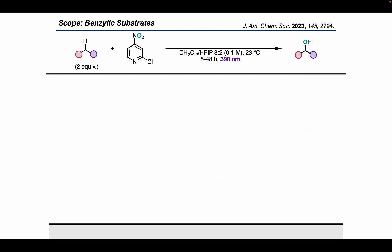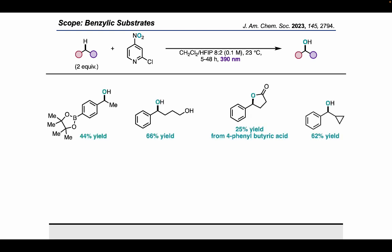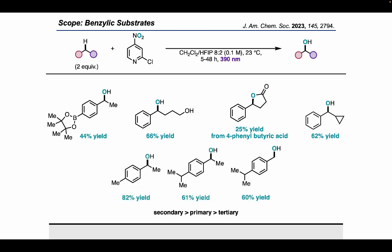One advantage of using mild and anaerobic conditions is the ability to tolerate oxidatively sensitive functional groups. A B-pin, free hydroxyl, and carboxylic acid were all tolerated under the reaction conditions, which would not be tolerated by many previously reported hydroxylation methods. When investigating substrates with inequivalent benzylic sites, a clear selectivity pattern was uncovered: the reaction was selective for secondary sites over primary sites, secondary sites over tertiary sites, and primary sites over tertiary sites, giving an overall selectivity pattern of secondary > primary > tertiary.